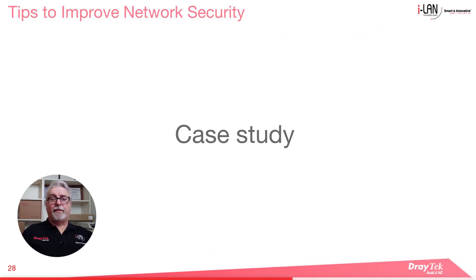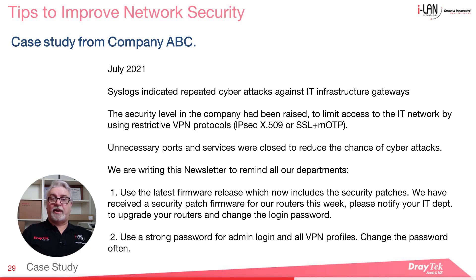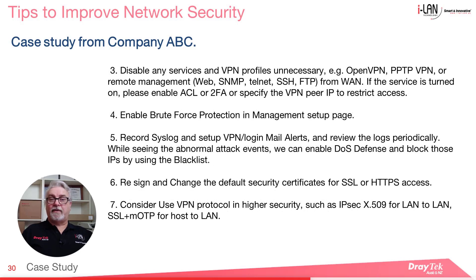Let's take a look at an actual case that happened recently. This one came up after repeated cyber attacks against a company's IT infrastructure gateways. The solution was to increase security on the border routers by limiting access to the IT network using restrictive VPN protocols or SSL plus MOTP. Any unnecessary ports and services were closed to reduce the chance of cyber attacks. The recommendation to branch officers included using the latest firmware, using strong passwords for admin logins and all VPN profiles and changing them often, disabling unnecessary services and VPN profiles, enabling brute force protection, recording the syslog and setting up VPN and login mail alerts, reviewing the logs periodically, re-signing and changing the default security certificates, and using higher level security for VPN connections.